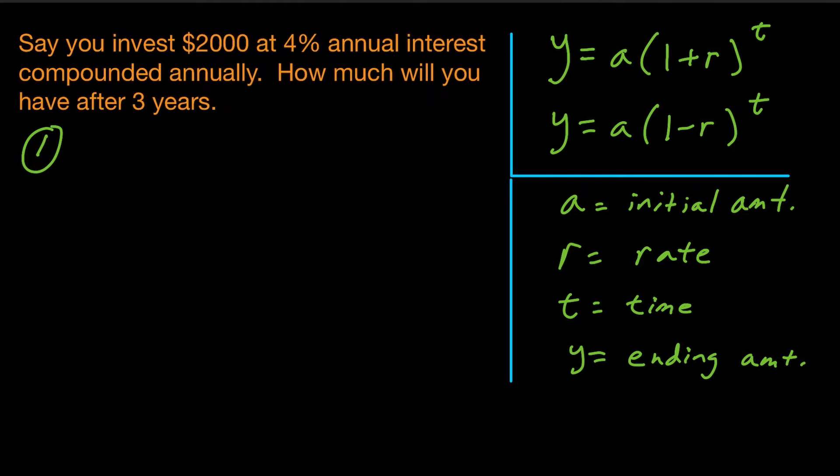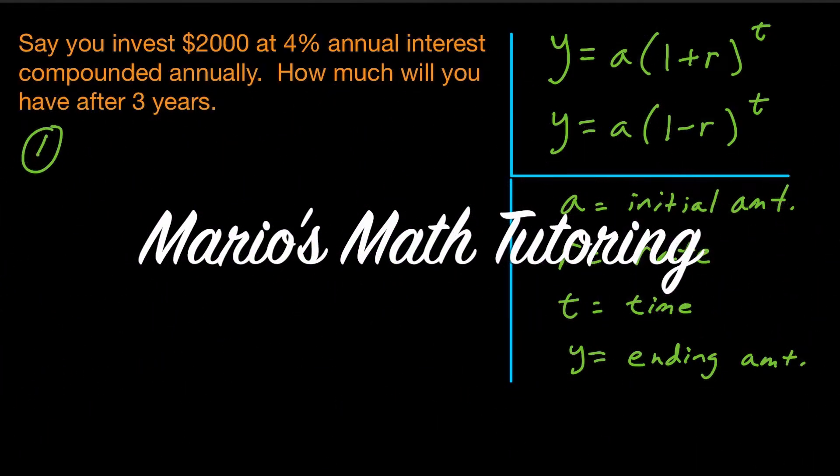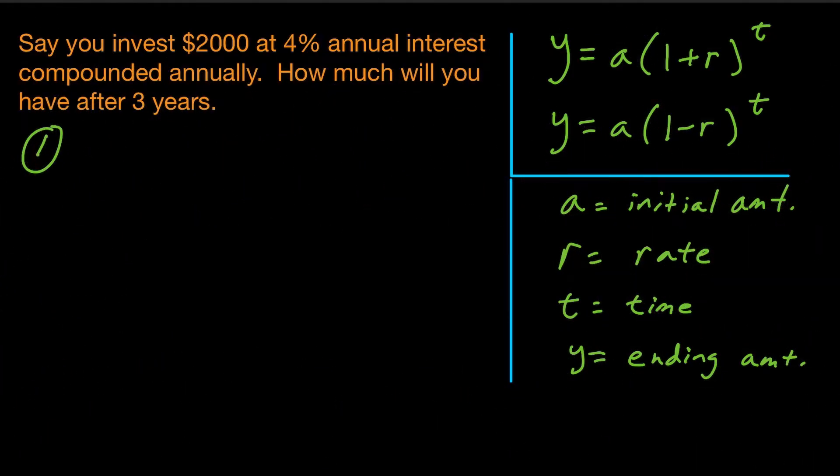In this lesson, we're going to talk about how to write an exponential growth function or an exponential decay function. And what we're looking at here is the equations that are in the form y equals a times 1 plus r to the t. That's this one here. Or y equals a times the quantity 1 minus r to the t.